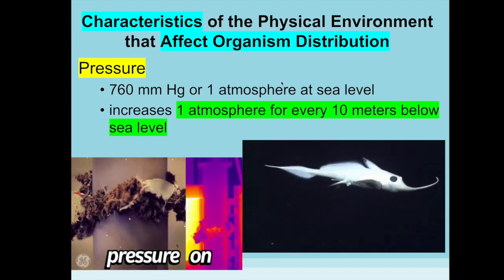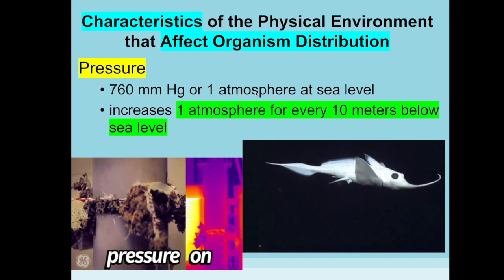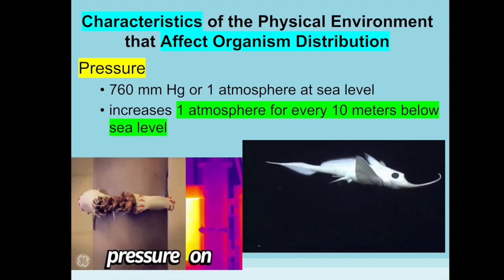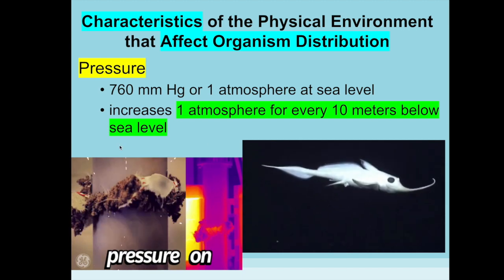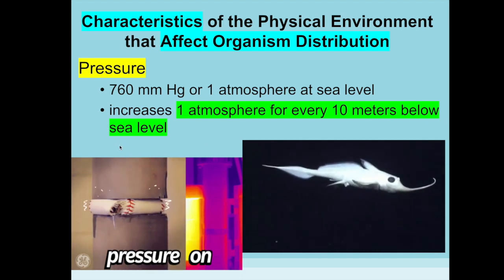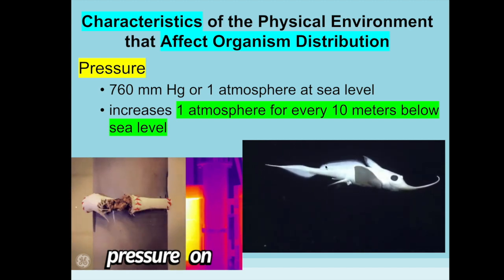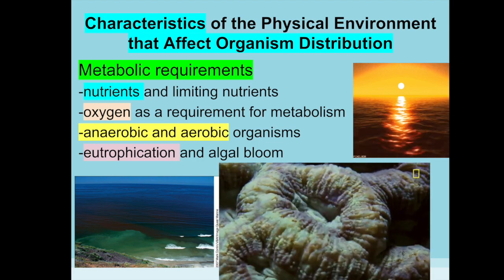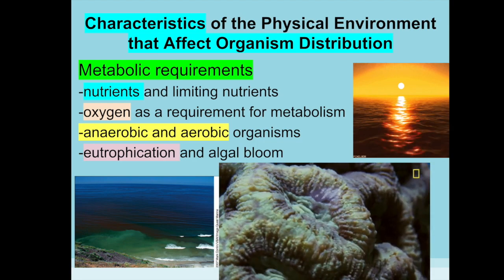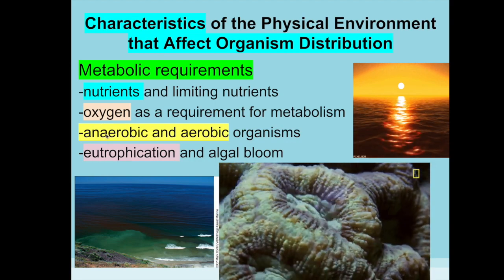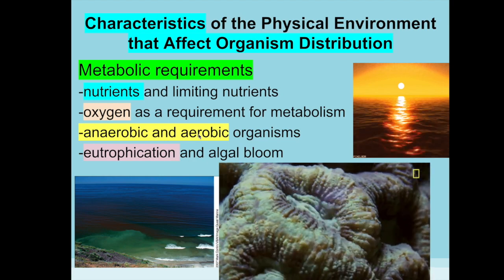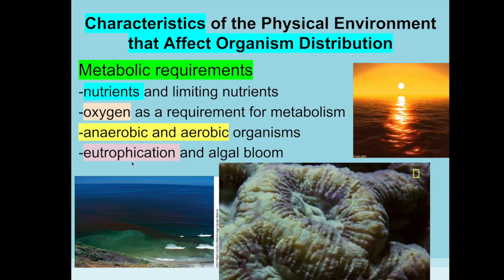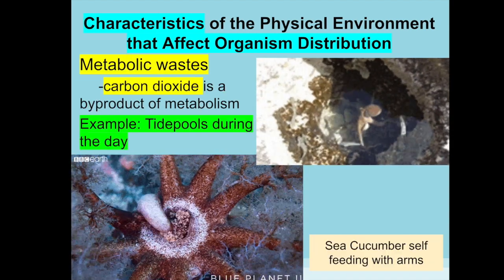Other physical characteristics affecting organisms include water pressure. At sea level we experience one atmosphere of pressure, and every 10 meters deeper in water adds another atmosphere. Some organisms handle that well; others cannot and are unable to live in the deepest parts of the ocean. Metabolic requirements also matter — what nutrients and oxygen do they need? Are they anaerobic, making nutrients without oxygen, or aerobic, requiring oxygen?